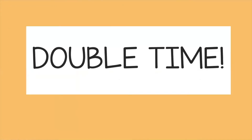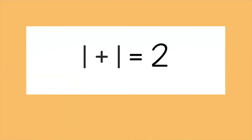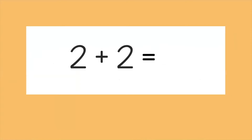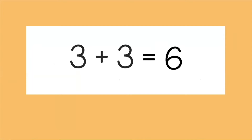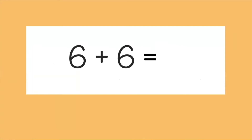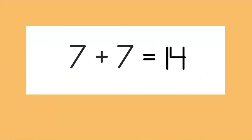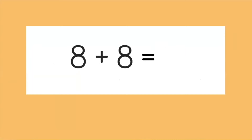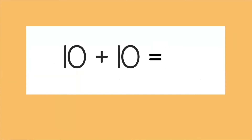Double time, get ready, go. One plus one equals two. Two plus two equals four. Three plus three equals six. Four plus four equals eight. Five plus five equals 10. Six plus six equals 12. Seven plus seven equals 14. Eight plus eight equals 16. Nine plus nine equals 18. Ten plus ten equals 20.